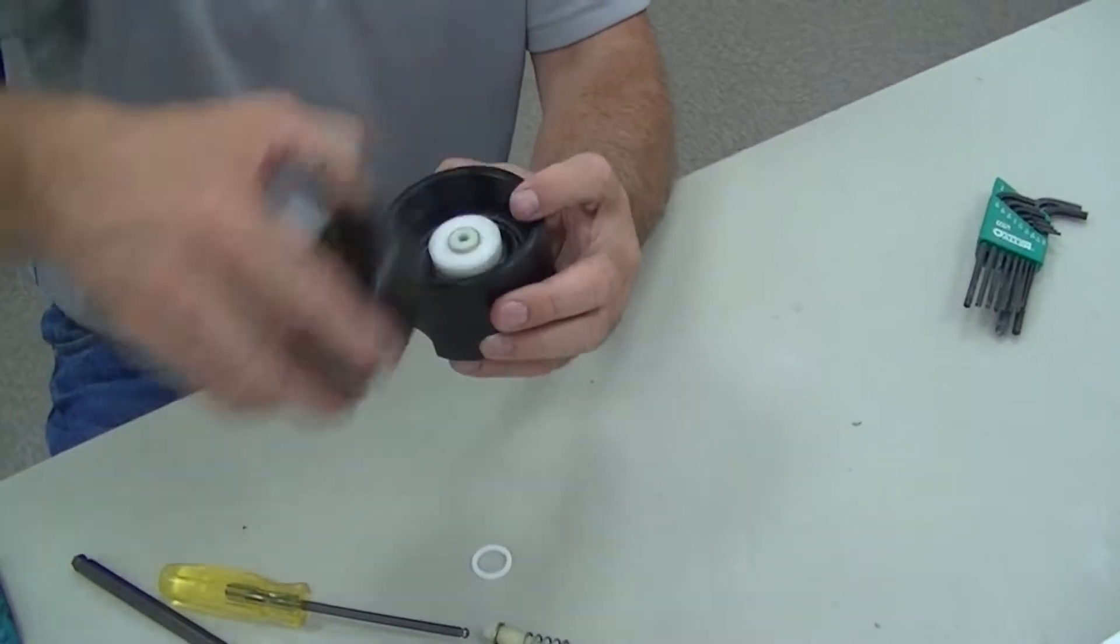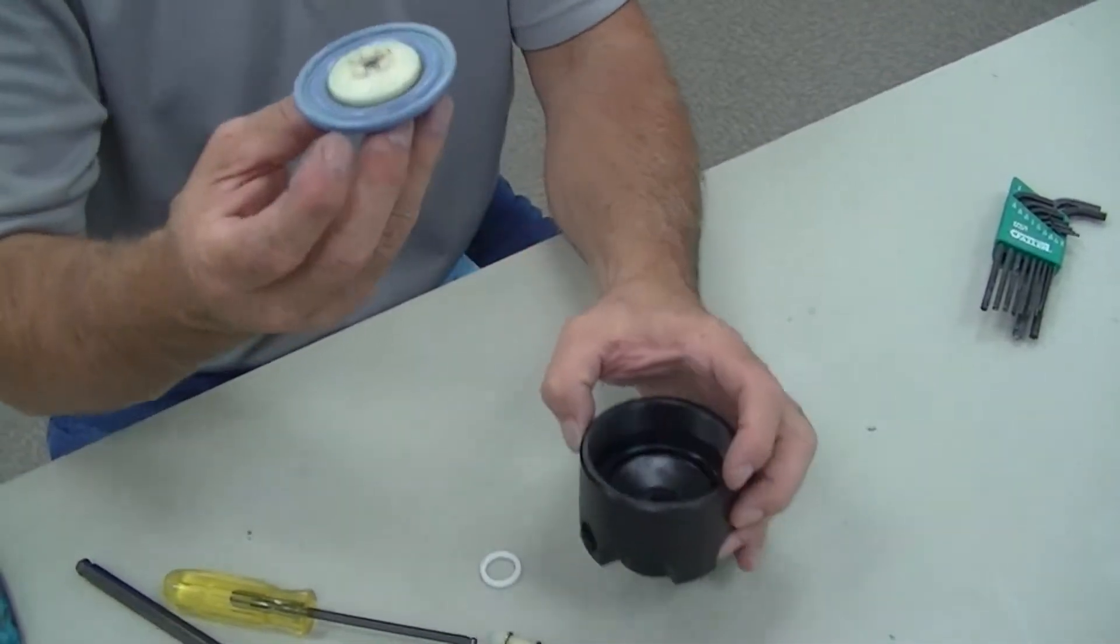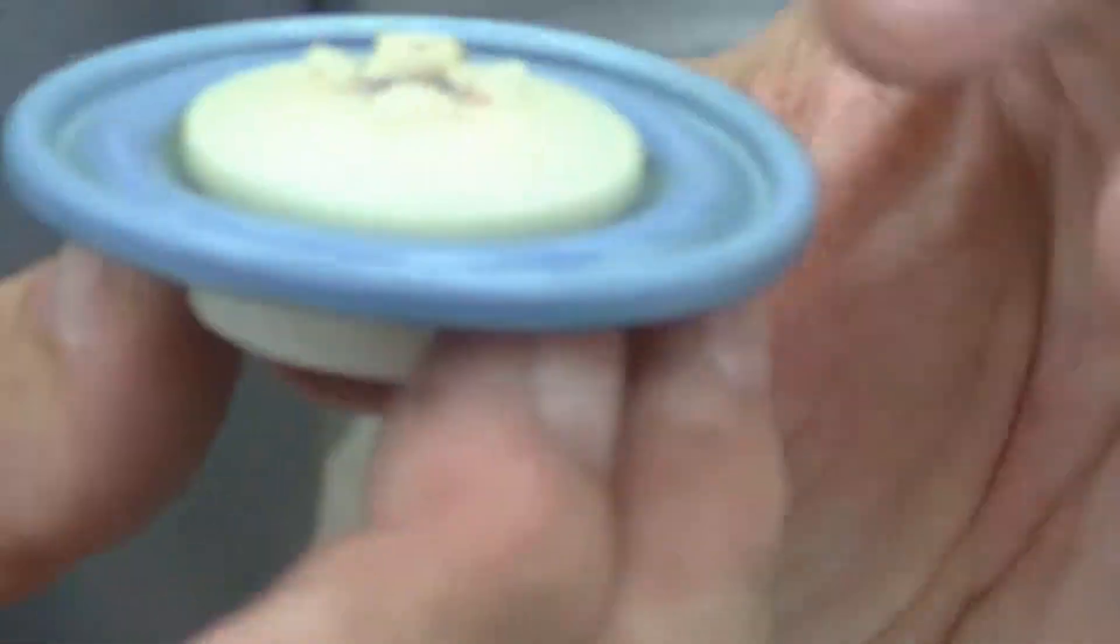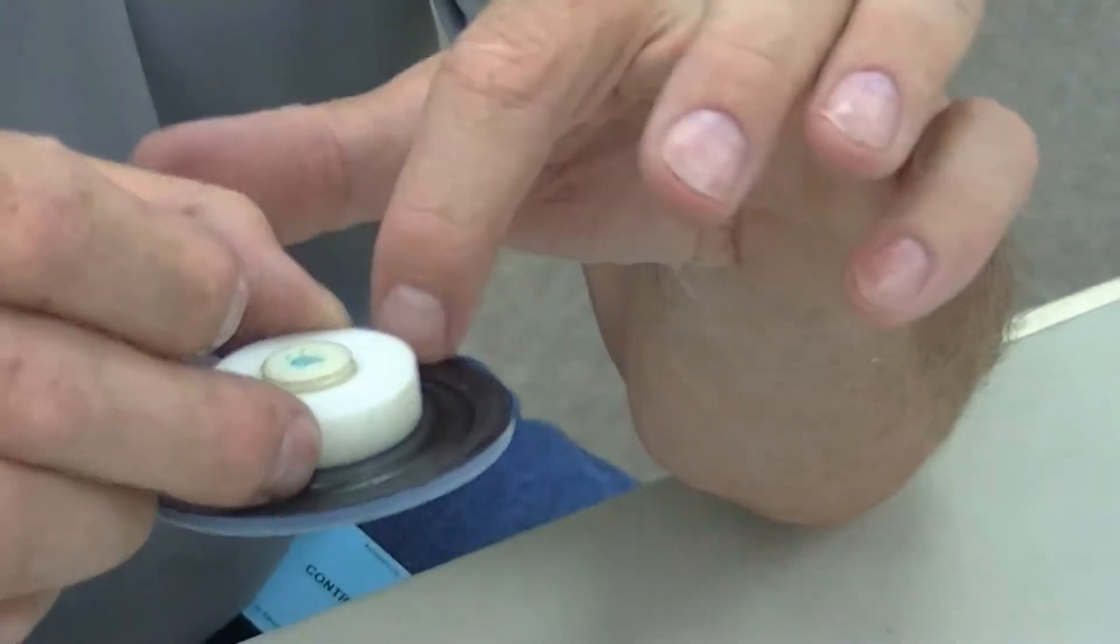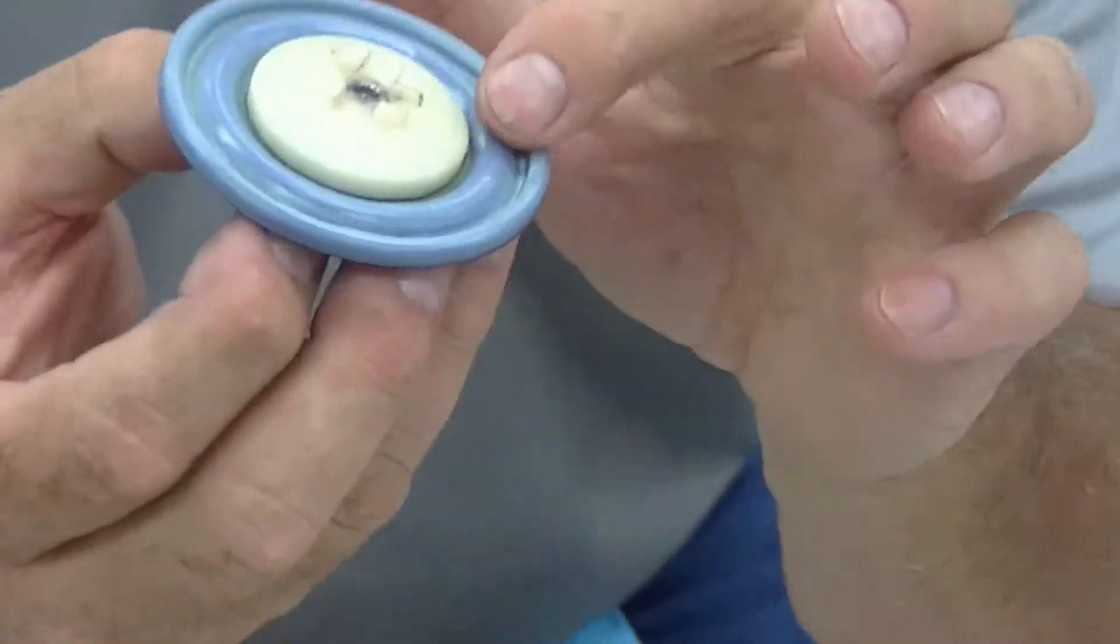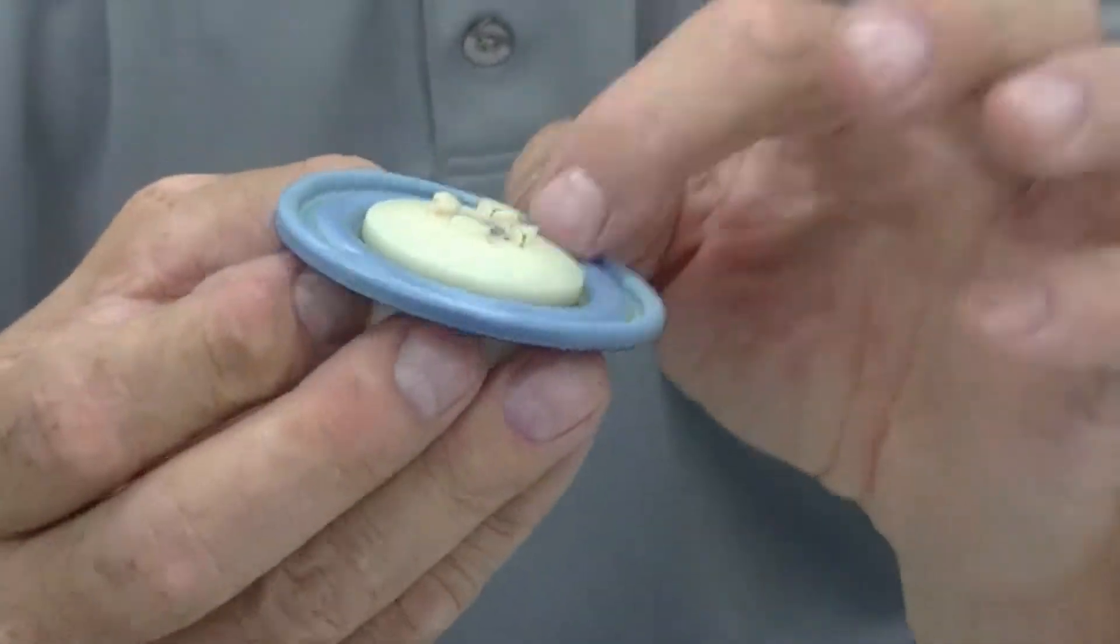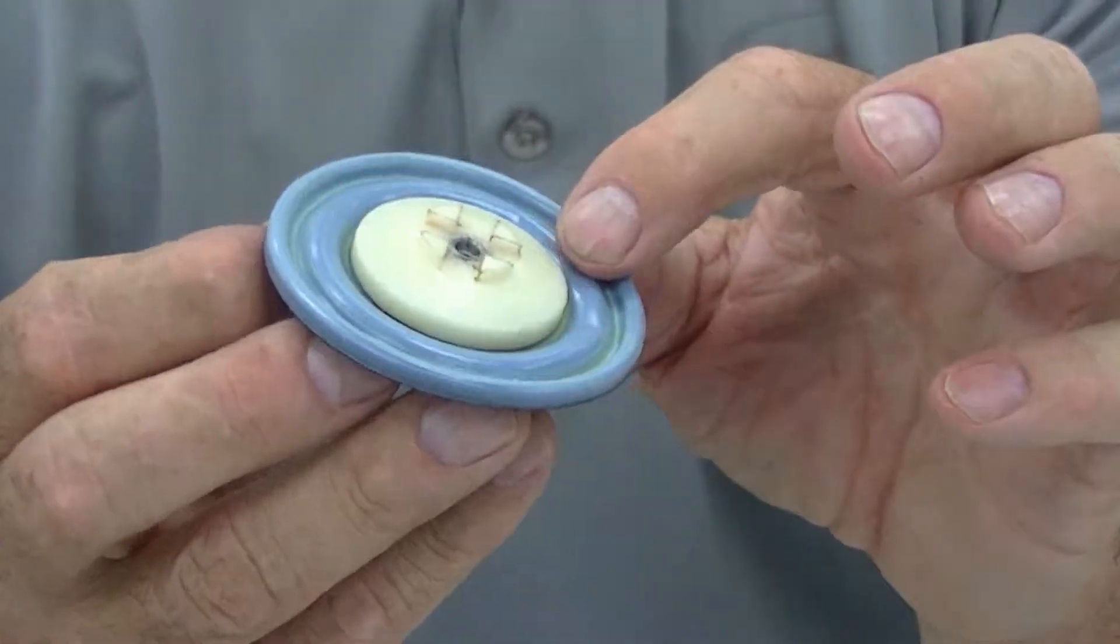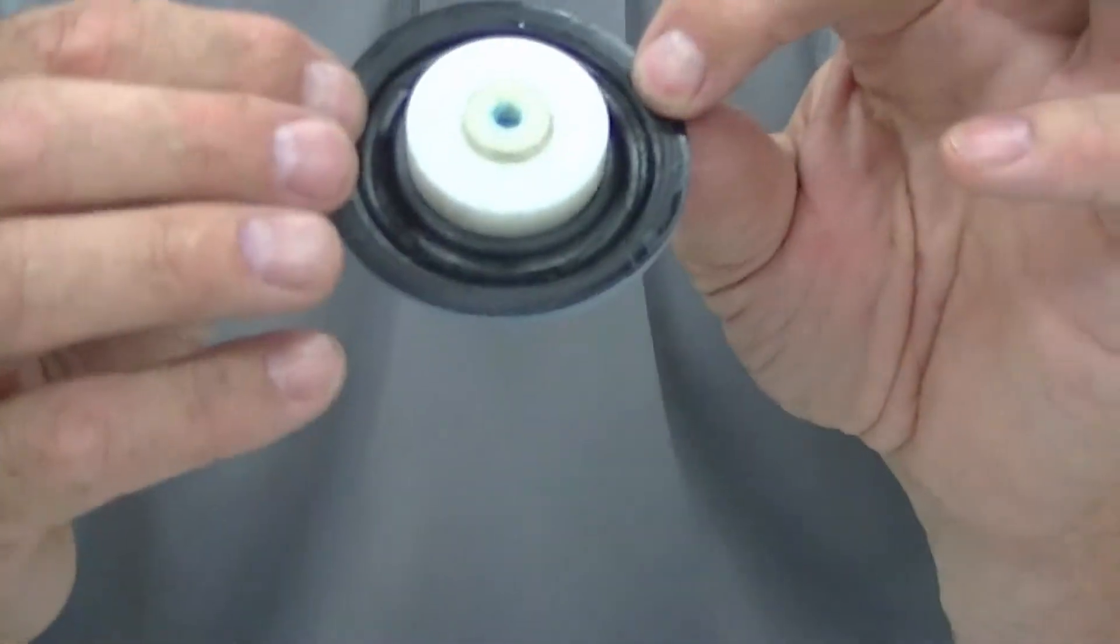And what came out with that is the diaphragm. This is what flexes and it's got basically just a normal rubber on one side and the other side is Teflon bonded to it. The Teflon side is the side that sees the fluid, this side sees the air.